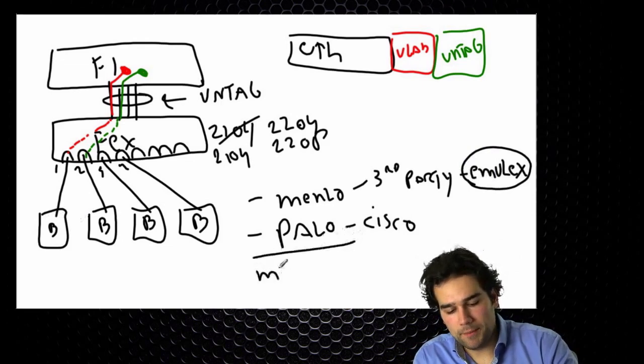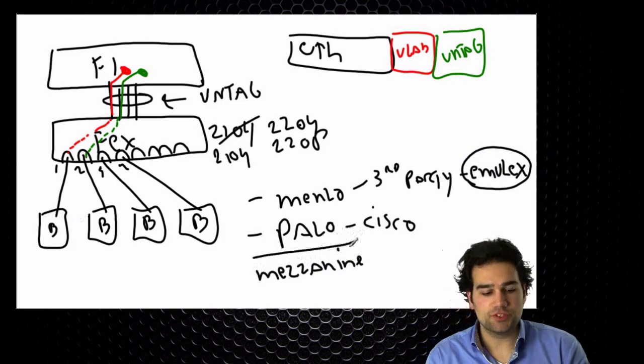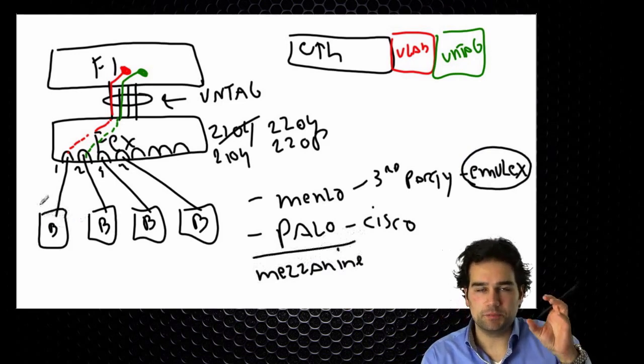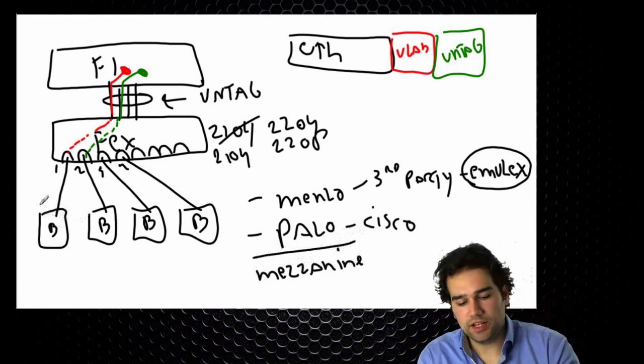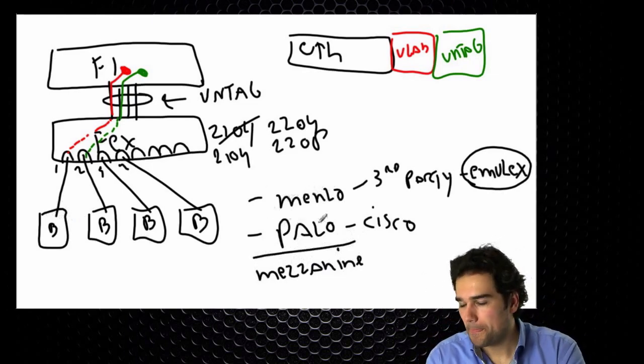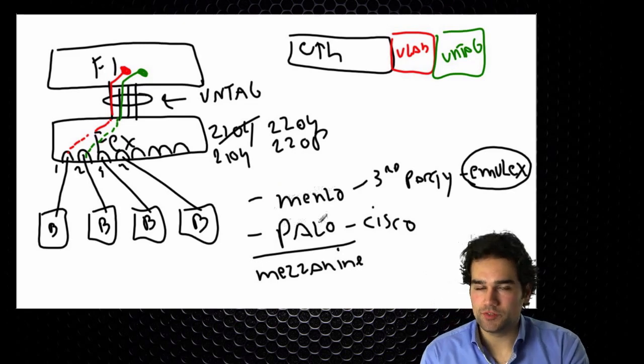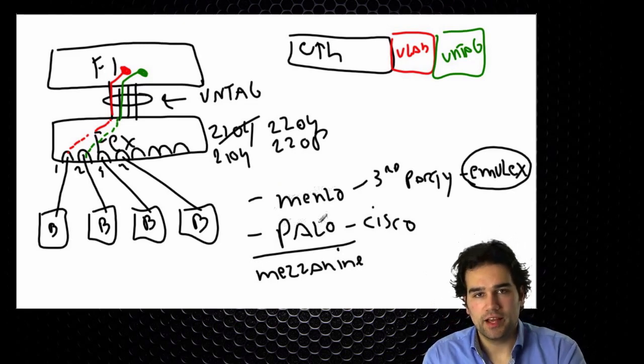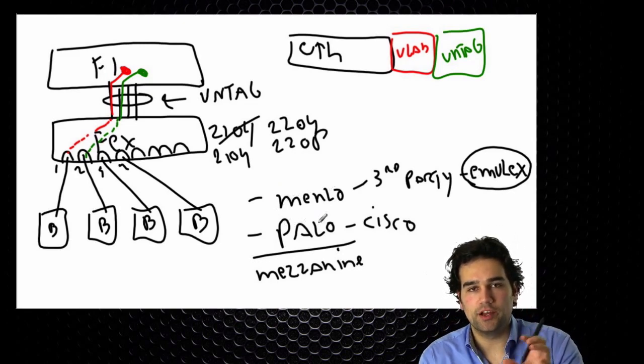They call this the mezzanine slot. So in each of the servers I have a specific slot called the mezzanine slot and in that slot I fit a network interface card. Actually in the more recent versions of the blades the B200M3 I can even fit like a Fusion IO card.